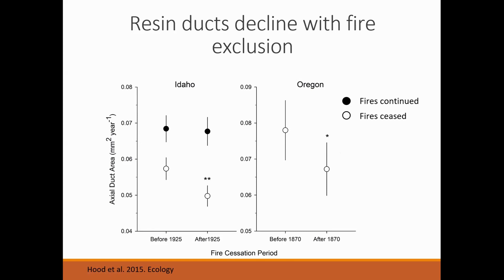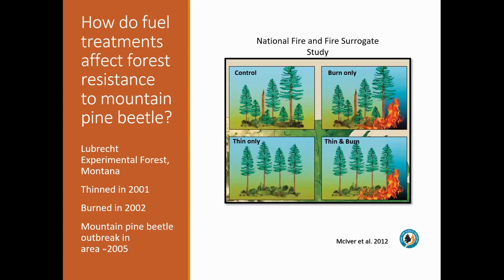This has big implications: by removing frequent fire, we're not only changing forest structure and composition, but we are also physiologically changing how trees allocate resources to growth, reproduction, and defenses.